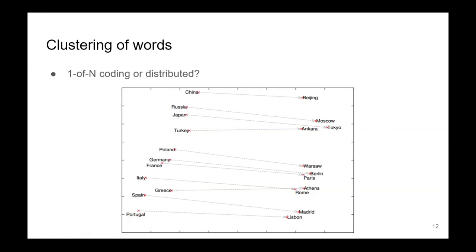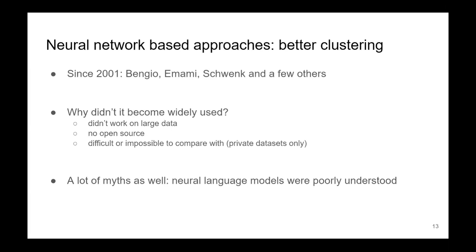For example, you get Eastern European countries in one cluster, Central European countries in another cluster, and Southern European countries in yet another cluster. The capital cities are clustered in a similar way, just shifted in some direction. The idea that each word should belong to a single class doesn't seem optimal by far. Here we can see that words are more like a composition of many different concepts, and seeing them as vectors in high-dimensional spaces seems to be both simpler and better. That's what we observed with neural networks.